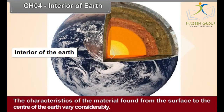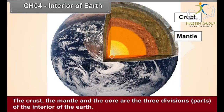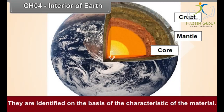The characteristics of the materials found from the surface to the center of the Earth vary considerably. The crust, the mantle, and the core are the three division parts of the interior of the Earth. They are identified on the basis of the characteristics of the materials.